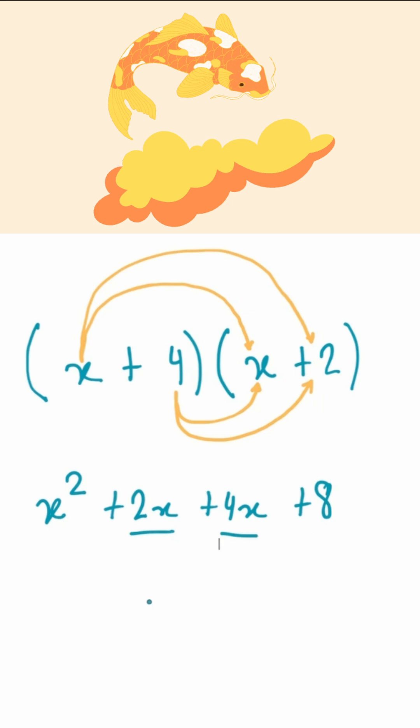Because they are like terms, they can combine together and give us an even simpler answer. So if we were to combine this and simplify this overall, we would get x squared plus 2x plus 4x gives us 6x, then plus 8. And that would be our final answer.